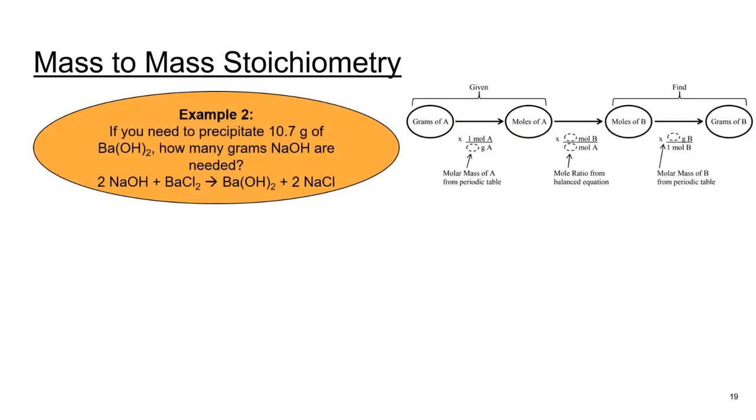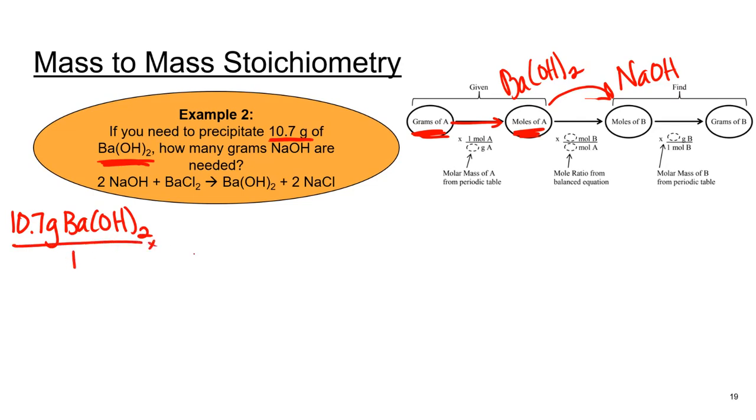We'll do another mass-to-mass example. This time it says you need to precipitate out 10.7 grams of barium hydroxide. So here, barium hydroxide is what's known, and we're trying to figure out how many grams of sodium hydroxide are needed. We're going to get from grams of barium hydroxide to moles of barium hydroxide first. Write out the known and its two-part unit over one. Bring down grams of barium hydroxide and get to moles of barium hydroxide.